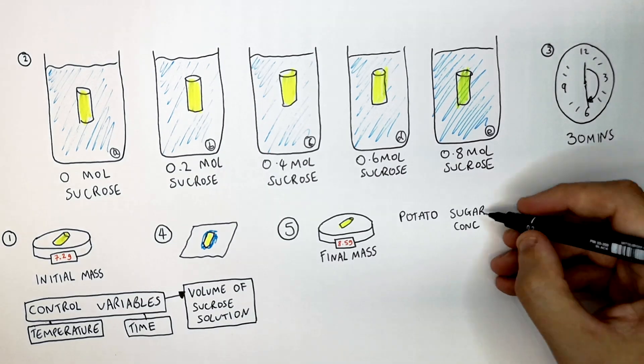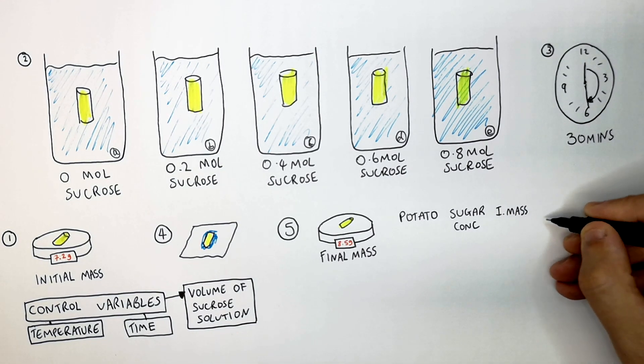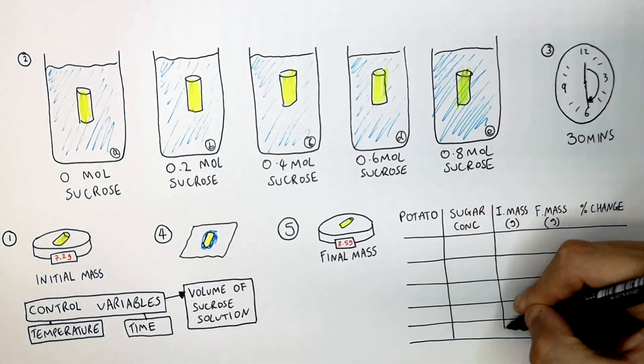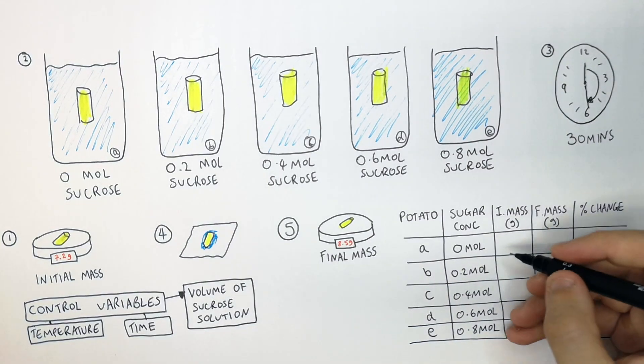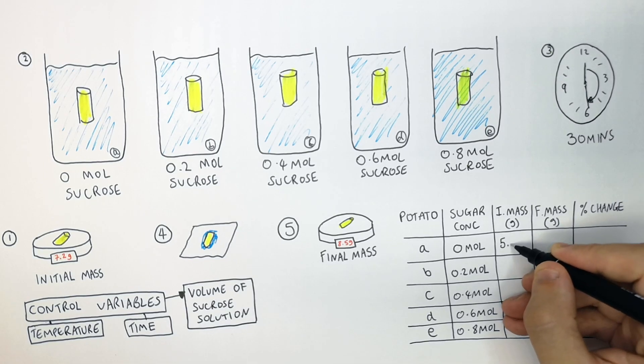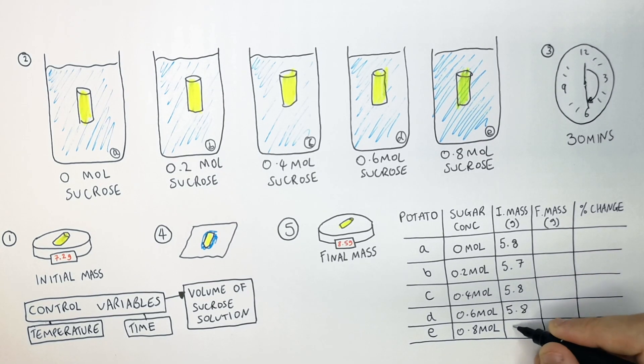So the data you needed to have recorded was the initial mass for each potato cylinder, and then once you've taken it out, the final mass after it's been in the sugar solution for 30 minutes. Because we controlled the volume and shape of the initial cylinders, the initial masses should be very close to the same mass. So in this case, they're all around 5.7 or 5.8 grams.